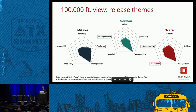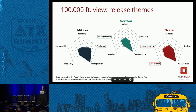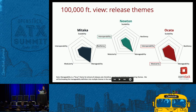Starting with the 100,000 foot view — I call this the spider view. It's an aggregate view of all the different projects and which themes they say they're investing in across the next three releases: Mitaka with rich PTL data, and Newton and Ocata with more forward-looking statements. Looking at Newton, you can see resiliency is slightly reduced and interoperability starts to move forward — including things like backwards compatibility and cross-project compatibility, for example Ironic plus Cinder for bare metal volume support.